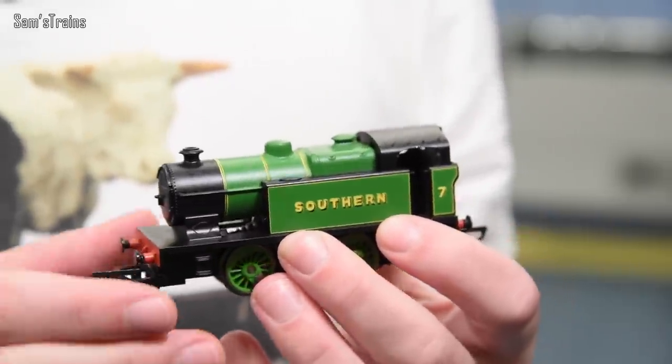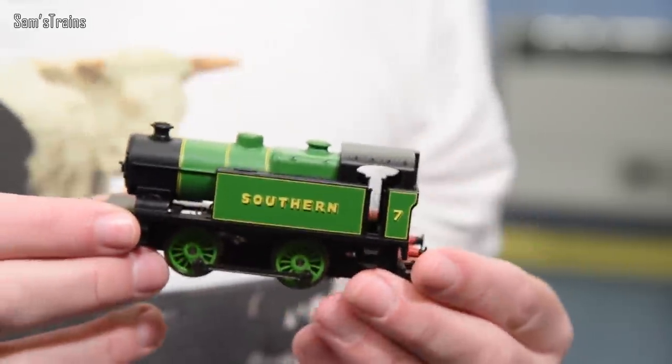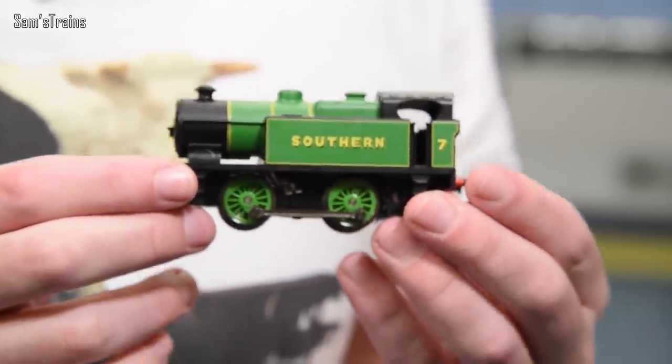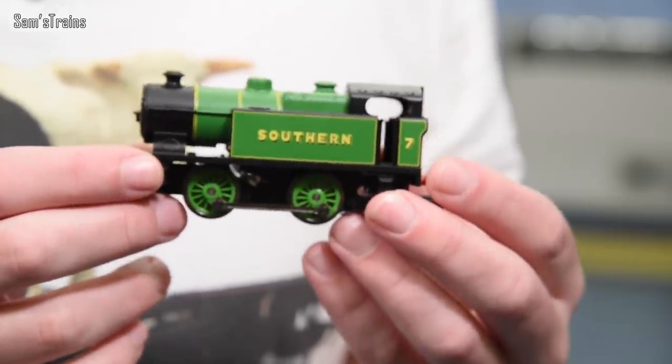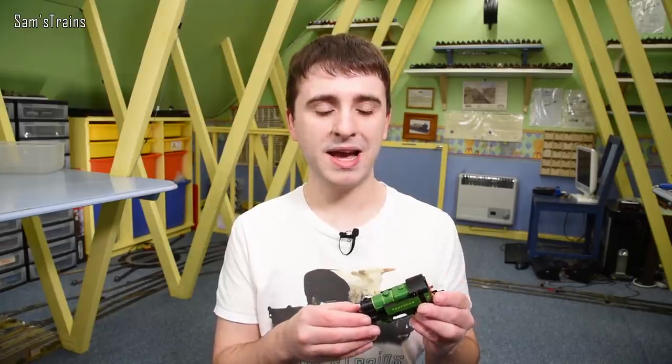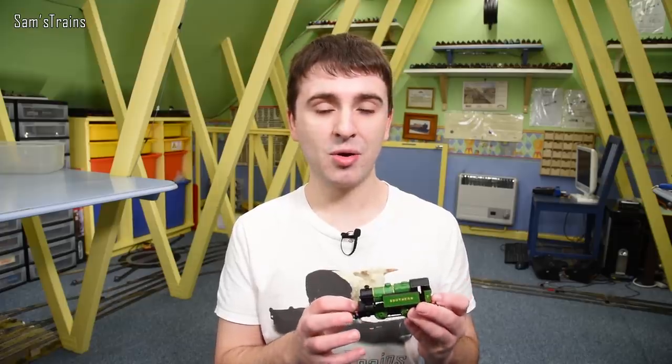So the test subject, or at least the victim as it's now going to be known, is this little Southern 0-4-0. Now this little engine has already proved itself quite nicely because it's run on more than twice the voltage it was designed for without breaking down. So this is going to be our little test subject today. This is the loco that's going to be submerged in water and we're going to try it and see if it works.